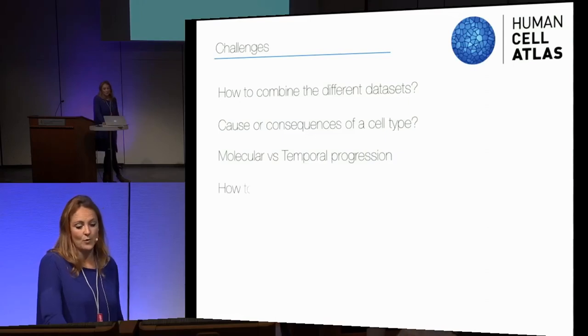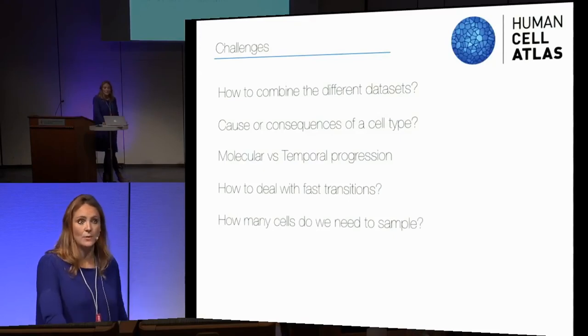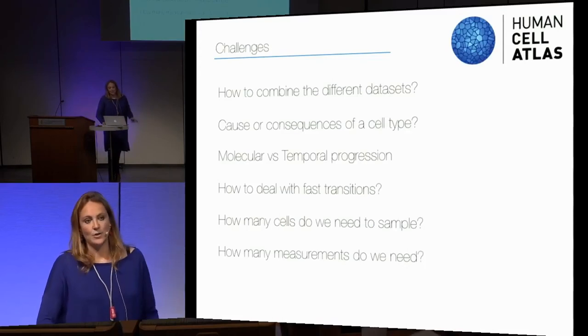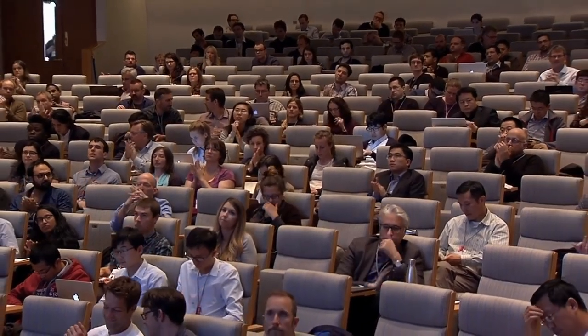To finalize, these are the challenges I see: how to combine different datasets given timescale differences, how to combine imaging with sequencing at different scales, what are the cause and consequences of phenotype, and molecular versus temporal progression. How do we deal with fast transitions — how many cells do we need to sample to get these transitions accurately, how many measurements do we need, and what is the spatial resolution required? With this I would like to thank you for your attention, and I'm happy to take questions.